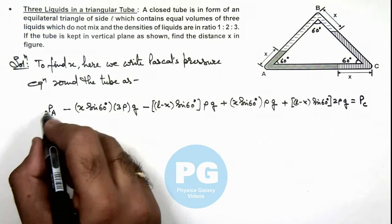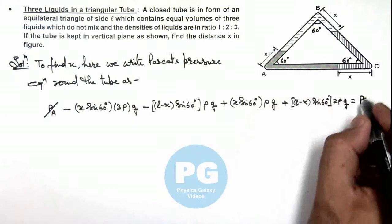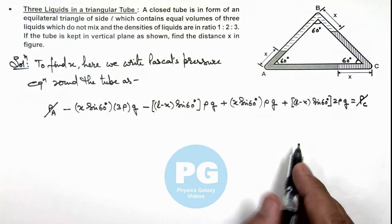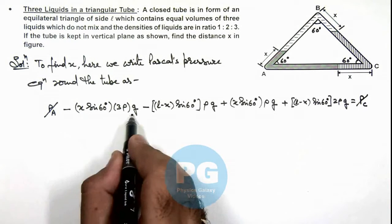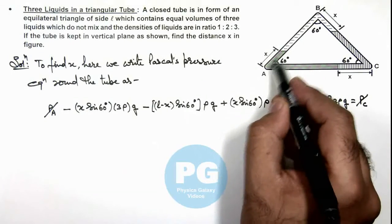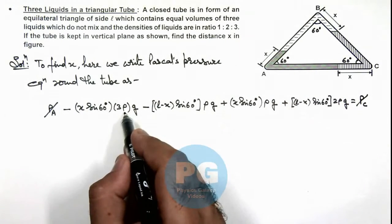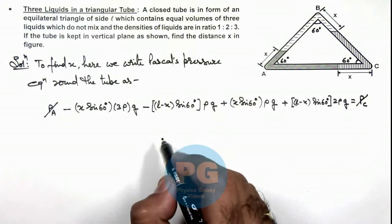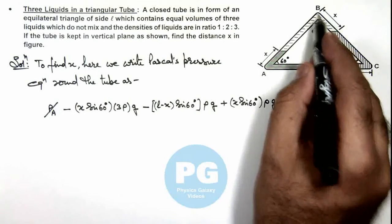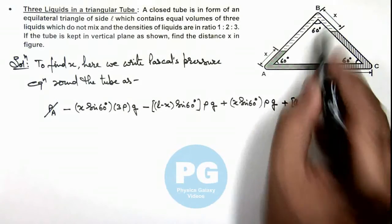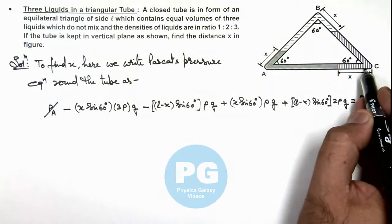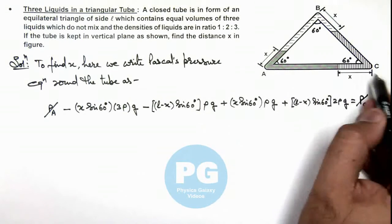Which is equal to the pressure at point A, so these two can be cancelled out. We can also mention that this pressure is the pressure of the liquid column of density 3ρ in the left arm of this triangular tube. This is in the upper arm of the tube, this is in the right arm where the liquid is of density ρ, and this is for the liquid of density 2ρ from this point to this point.